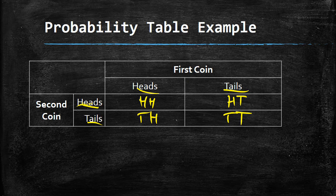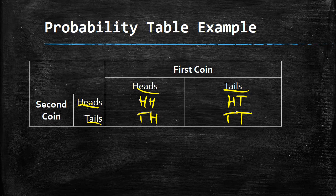If you notice from our previous example where I showed you the probability tree, we get the exact same outcomes: heads heads, heads tails, tails heads, and tails tails. We can see that our sample space contains these four different possible outcomes.